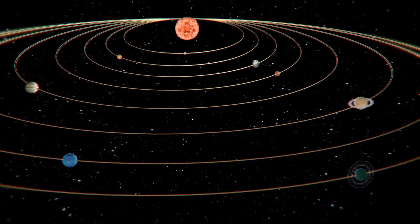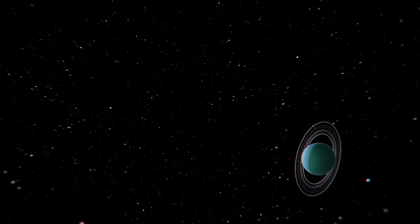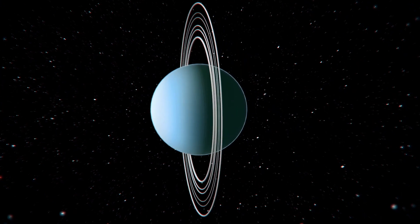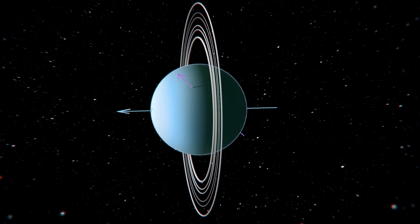Uranus is special in that it spins almost on its side like a pig on a spit roast, while the axis of its magnetic field is offset from the spin by 60 degrees. This gives the planet's magnetic field an odd wobble that scientists cannot model.